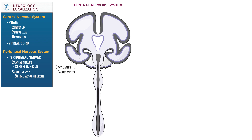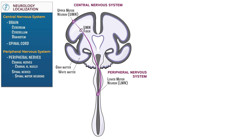Label a cerebral cortical neuron as an upper motor neuron, and draw a white matter tract labeled as an upper motor neuron fiber. Show its synapse on a spinal motor neuron, labeled as the lower motor neuron. Introduce the peripheral nervous system and label the spinal nerve as a lower motor neuron fiber. For completeness, include a sensory receptor, a neuromuscular junction, and skeletal muscle.